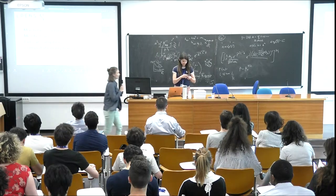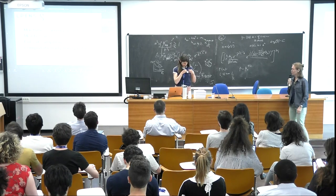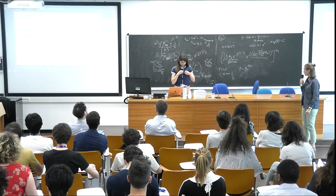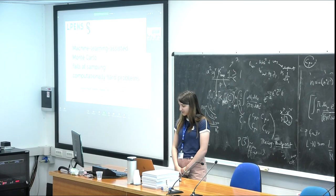This next talk will be given by Jeanne Trinquier, a PhD student at École Normale Supérieure. She will talk about how we can use machine learning to assist Monte Carlo sampling, and also show where it fails at sampling very complex problems.